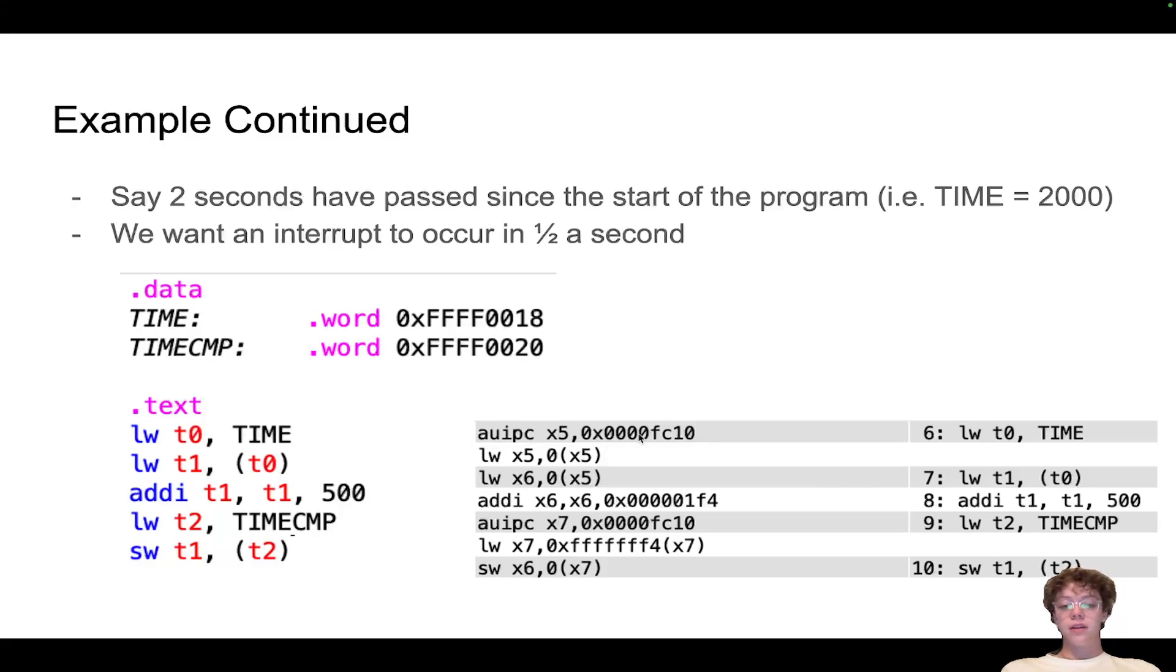So it has this AUIPC here, so it puts this address here into x5, and then it loads from that address into x5. So what this is doing is: RARS has already stored this value you have right here some place in memory. That someplace in memory is 0xfc10, and then once it has that place in memory, you can just load from there.